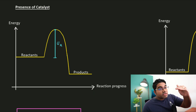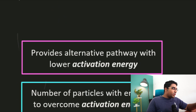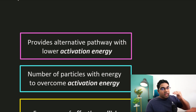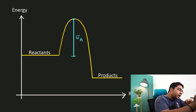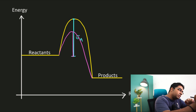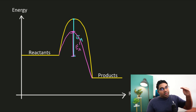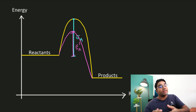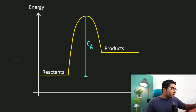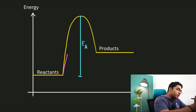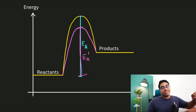Let's look at the effect of a catalyst on the rate of reaction. A catalyst provides an alternative pathway with a lower activation energy. On the energy level diagram, the reactants now have to climb a smaller hill to reach the products — the activation energy drops, shown as EA prime. This applies whether it's an endothermic or exothermic reaction. The new activation energy EA prime is lower than the original activation energy.